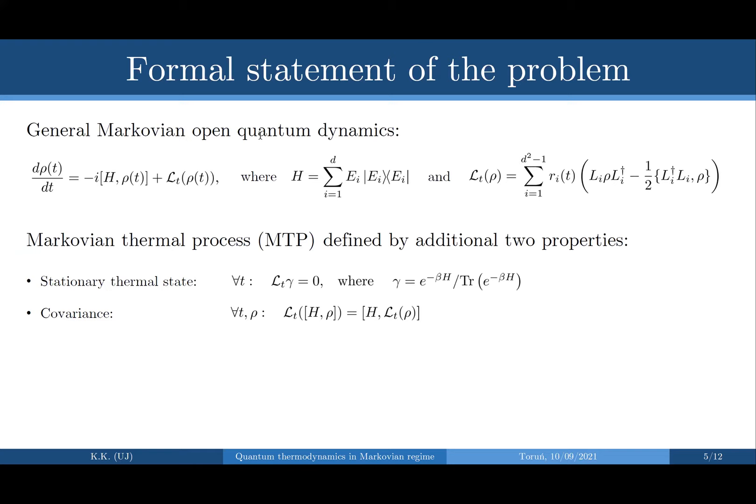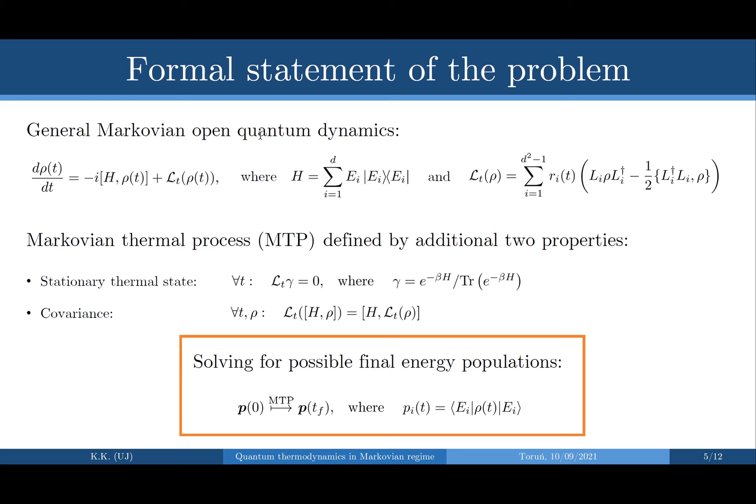A Markovian thermal process is any quantum channel that arises from integrating this equation — you can choose whatever parameters and rates you want, as long as the two properties are satisfied. Our main question: we don't look at general states but only at occupations in the energy eigenbasis. So given a system initially with some distribution over the energies, what can this distribution be at some later time? We would like to find, for a given p₀, the whole set of final distributions that can be achieved by Markovian thermal processes.